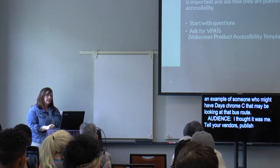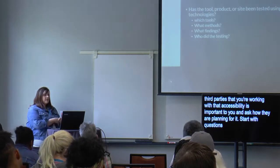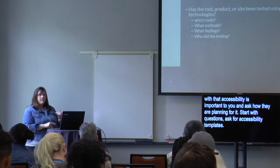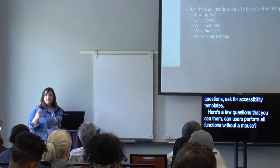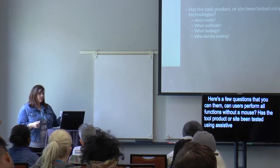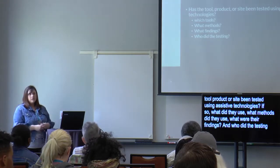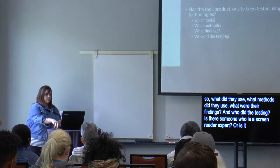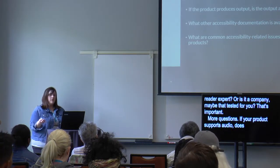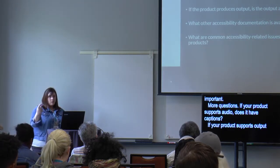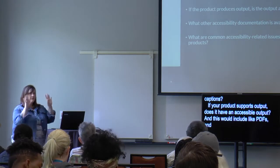Start by asking vendors questions and requesting VPATs — Voluntary Product Accessibility Templates. Ask: Can users perform all functions with a keyboard? Has the tool been tested using assistive technologies, and if so, what methods were used and what were the findings? Who did the testing — is there a screen reader expert or a company that tested for you? If your product supports audio, does it have captions? If it produces output, is that output accessible — for example, are PDFs accessible?